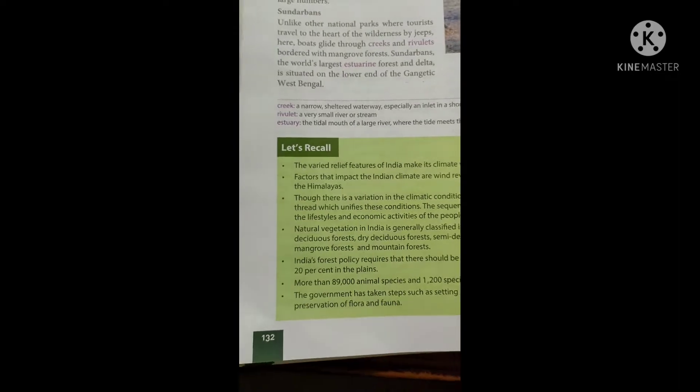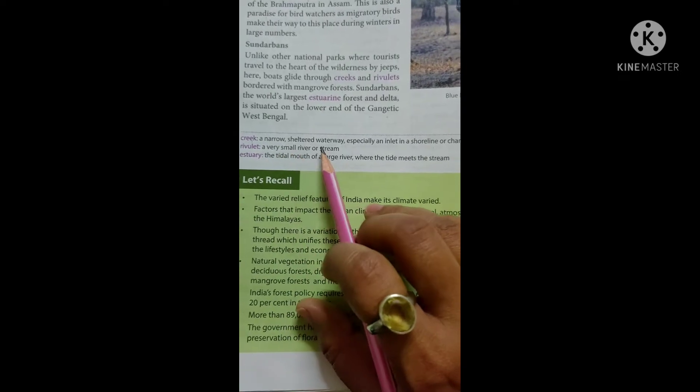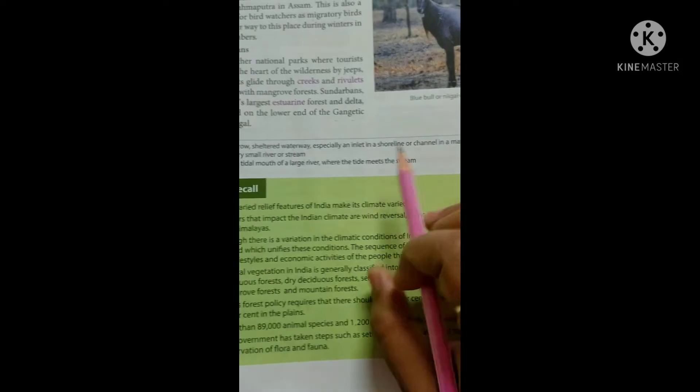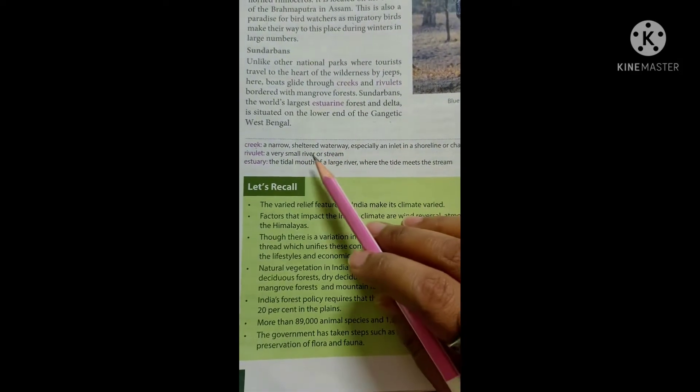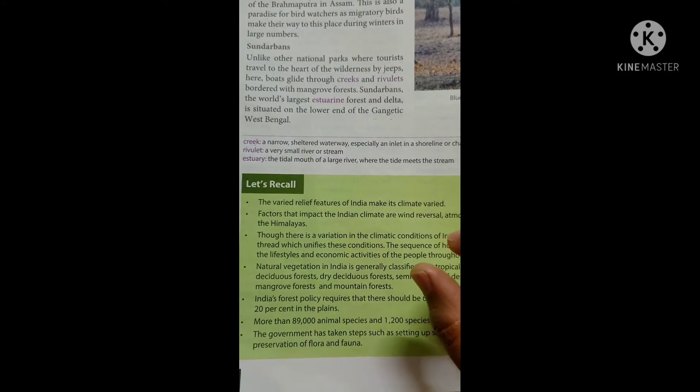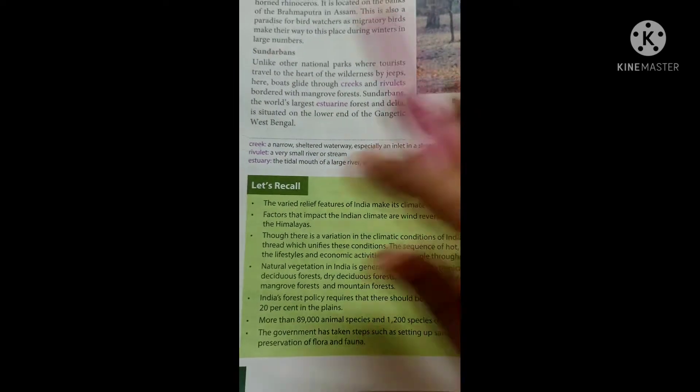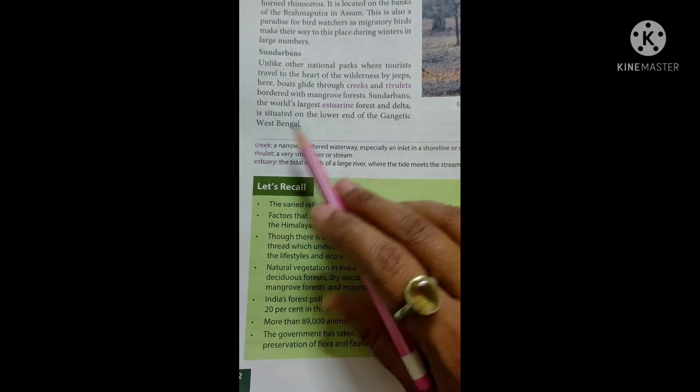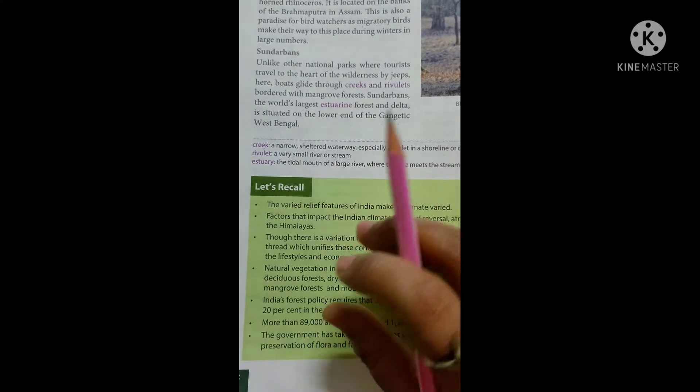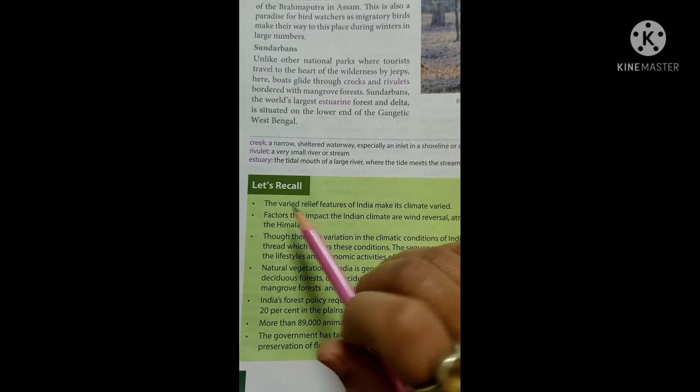There are three words that we will read. First is creek. Creek means a narrow sheltered waterway, especially an inlet in a shoreline and channel in a marsh. This is a very narrow area which is called creek. Next is rivulets. Rivulets is a very small river or stream. This is a very small river or stream.